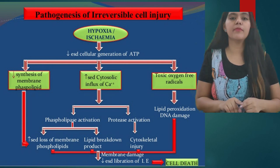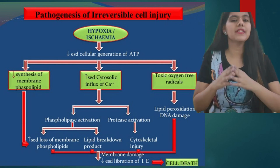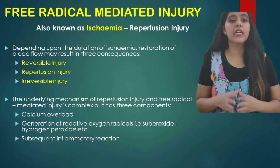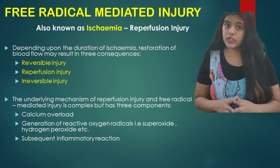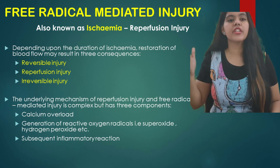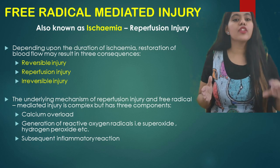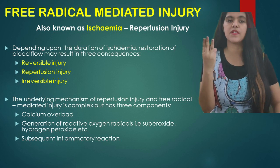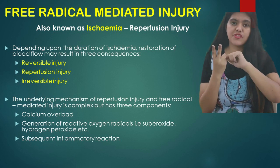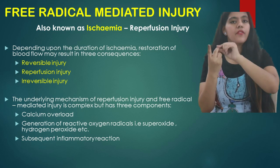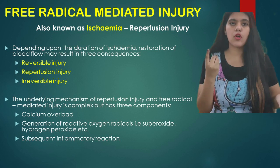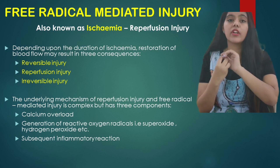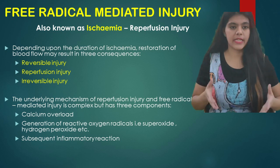The next type of cell injury is free radical mediated injury, also known as ischemia reperfusion injury. Depending upon the duration of ischemia, the restoration of blood flow may result in three consequences: reversible injury, irreversible injury, or reperfusion injury, which we will now discuss.